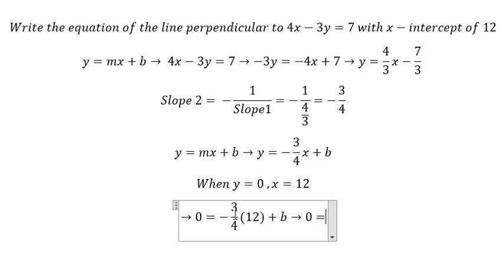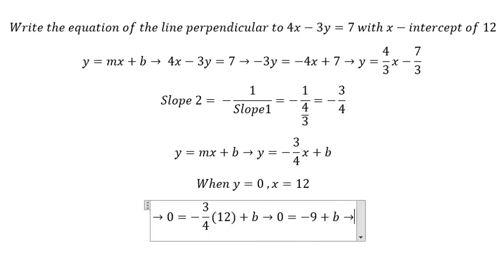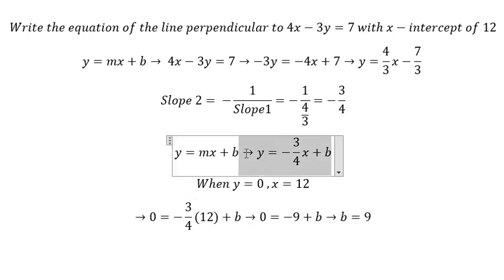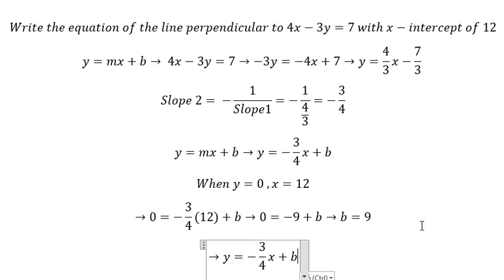This gives us -9. We move -9 to the left, and we have b = 9. Now we can put 9 here, and this is the final answer.